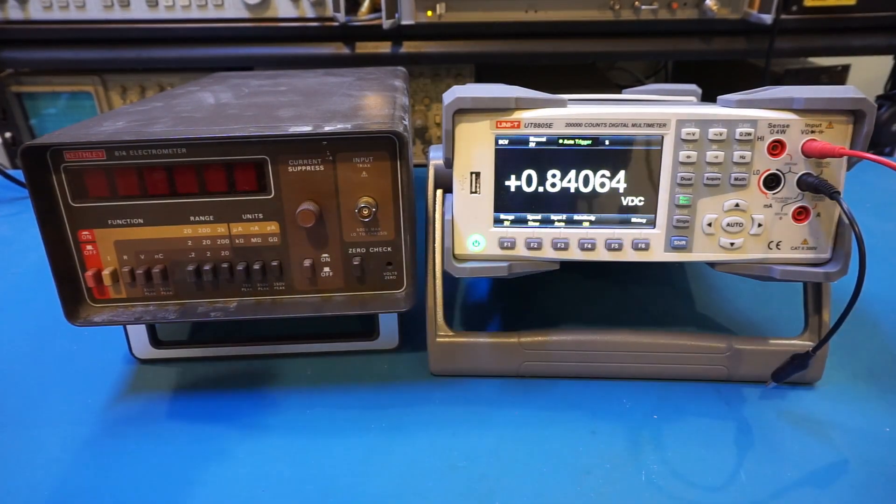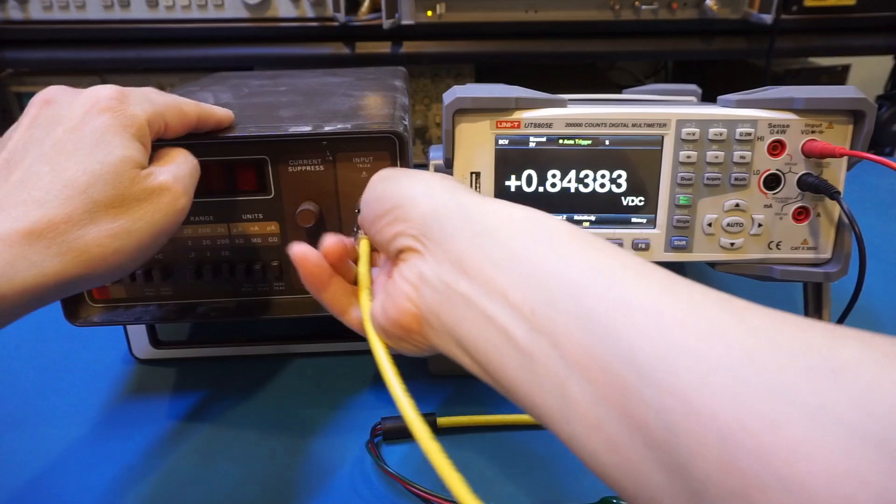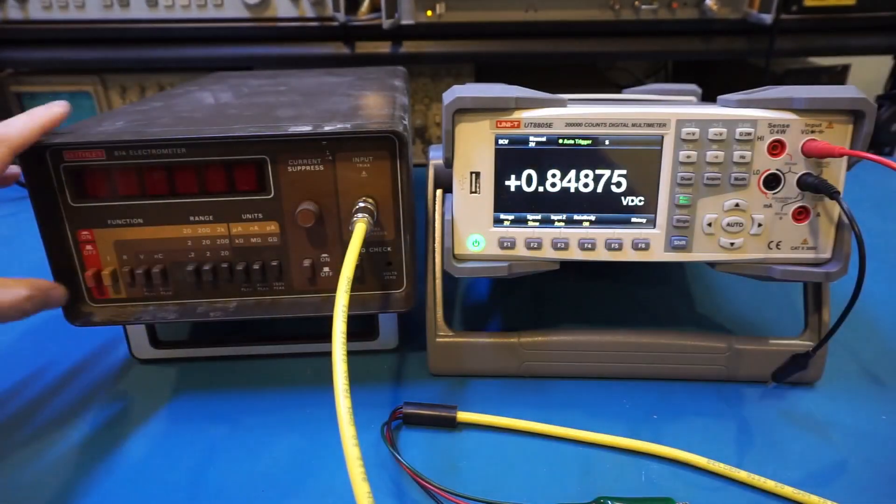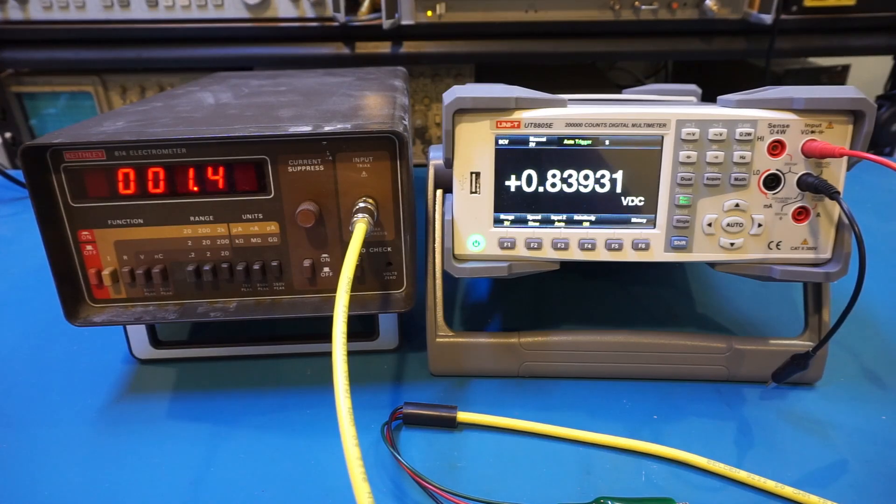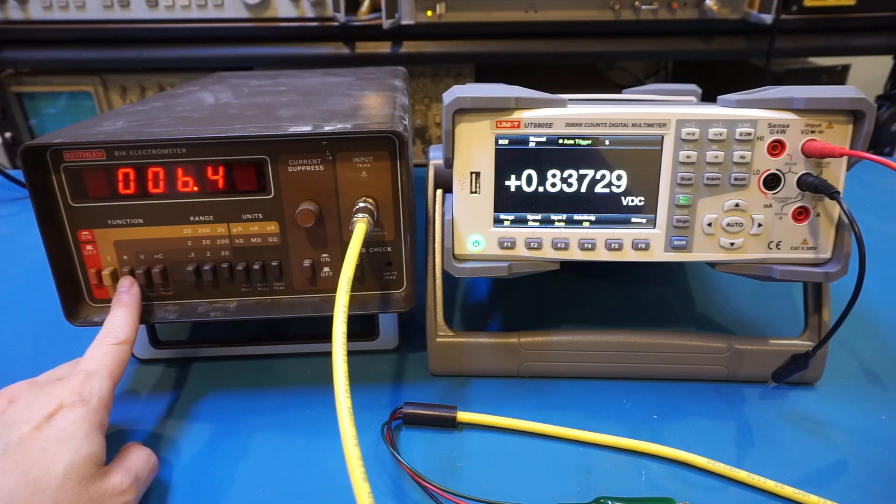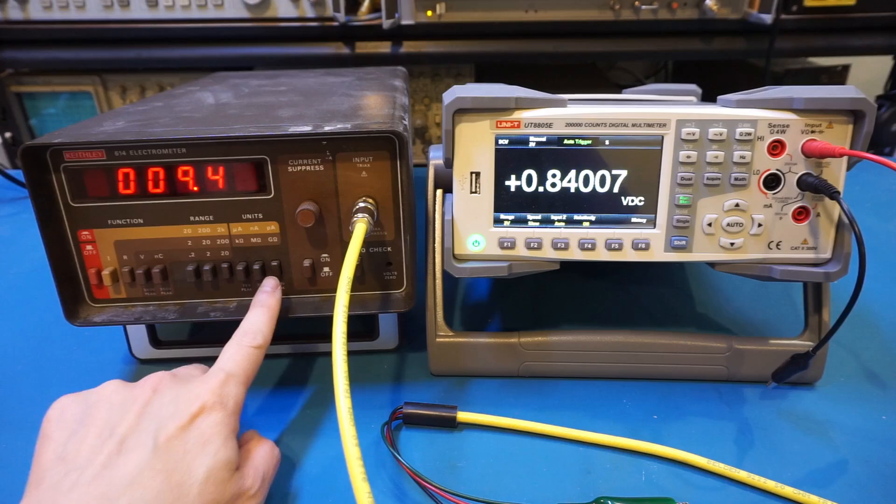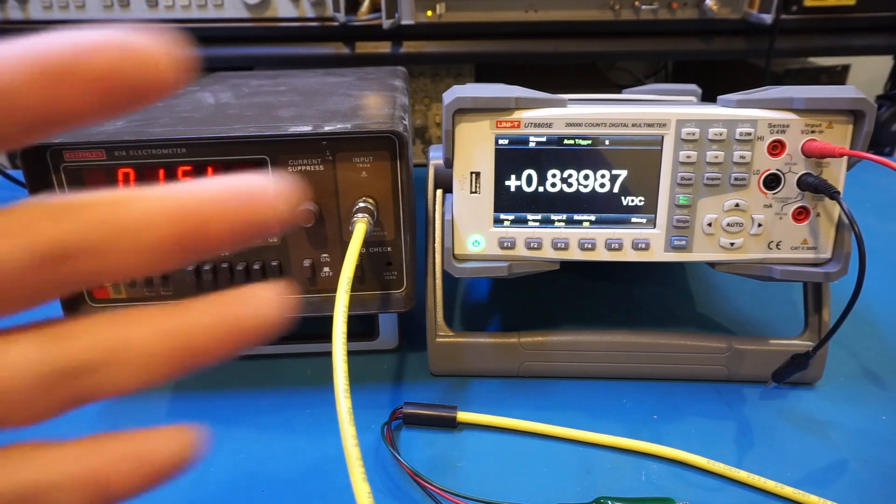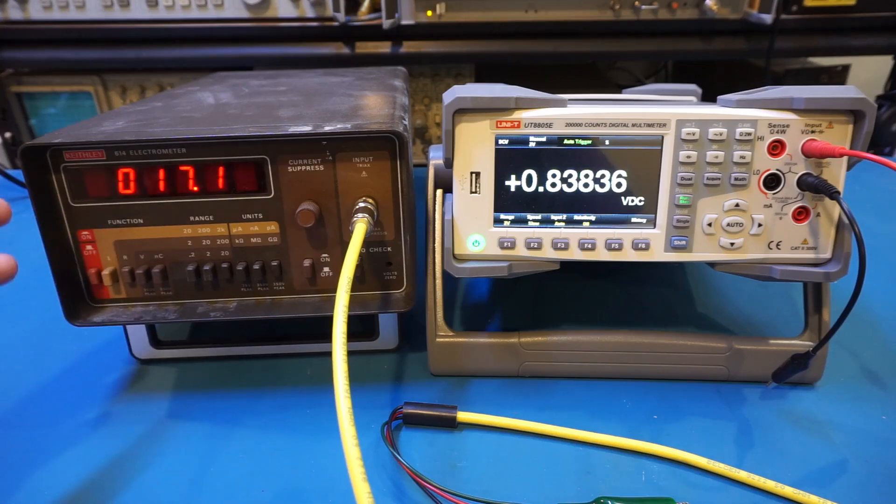And now let me connect the triax to the Keithley 614. And we'll power it on. And you can see we are already in resistance measurement mode. Currently, the range is 20 gigaohms. So that is actually all set. And you can see that without anything connected, the reading is increasing as it is trying to measure the resistance.